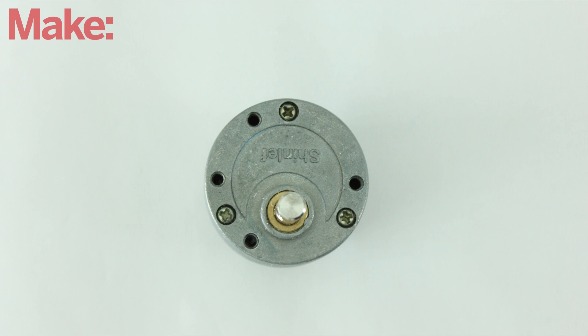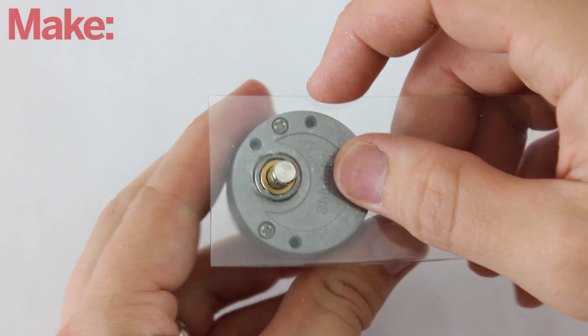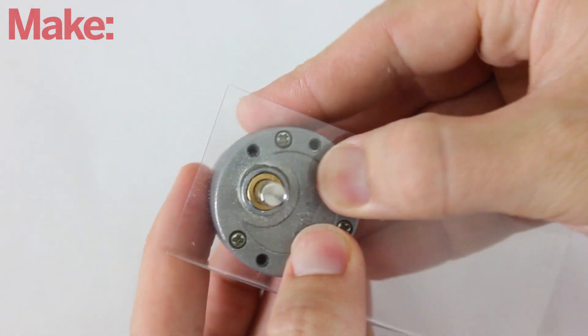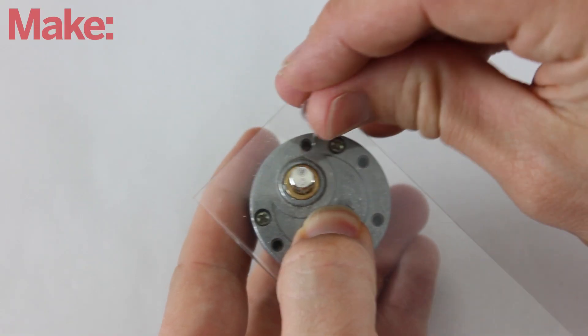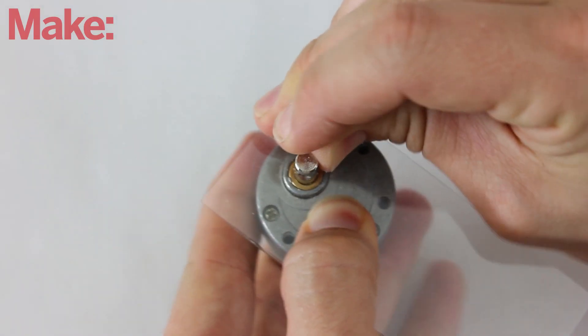To attach the motor, we need to drill some holes for the mounting screws. To transfer the hole pattern, I took a piece of clear plastic and held it up to the face of the motor. Then I used a pin to poke a hole through the center of each screw hole.